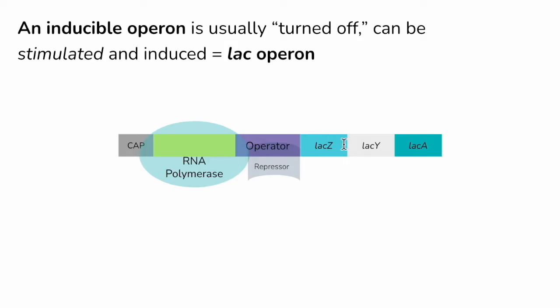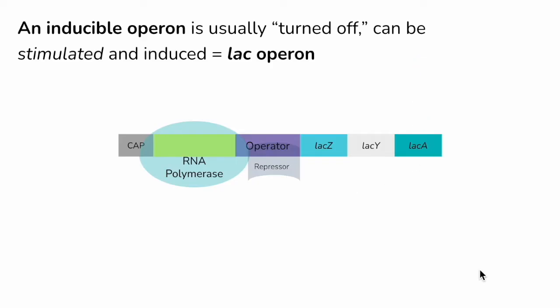The purpose of these genes — lac Z, lac Y, and lac A — is to provide instructions for the cell to build parts of proteins to digest lactose. If there's no lactose in the cell, these genes don't need to be turned on because we don't need any enzyme to digest lactose.